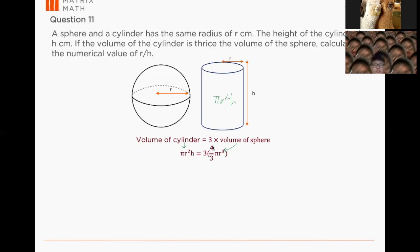So why I love this is because I immediately can cancel off my 3. So you will have πr²h equals to 4πr³.